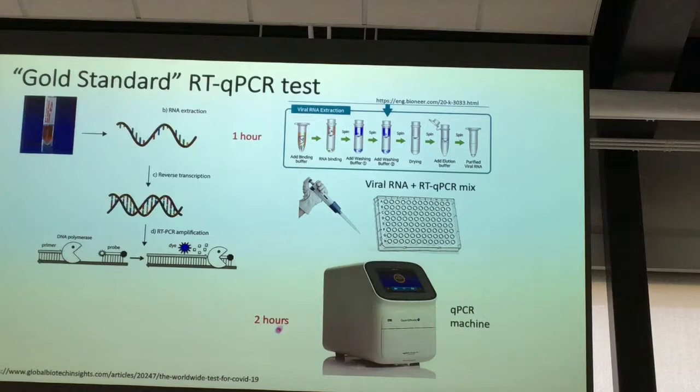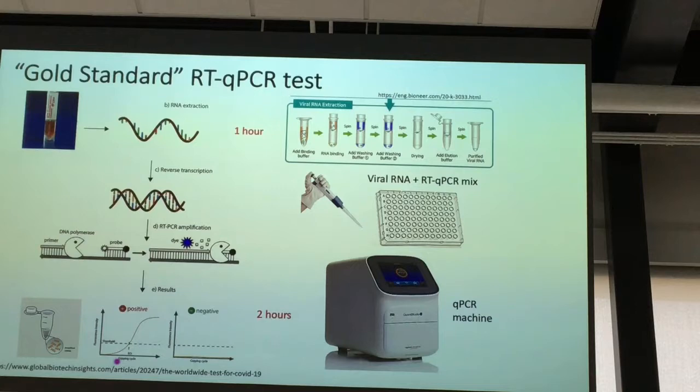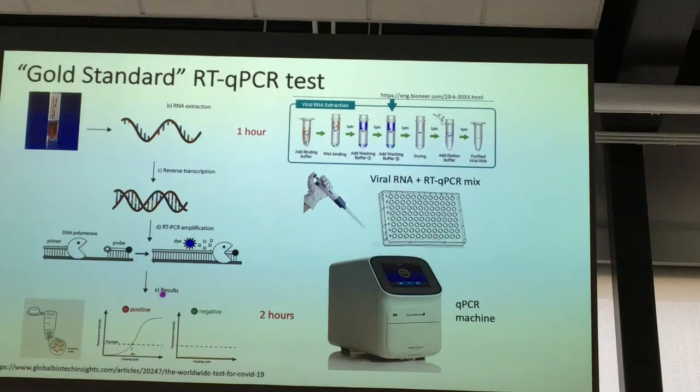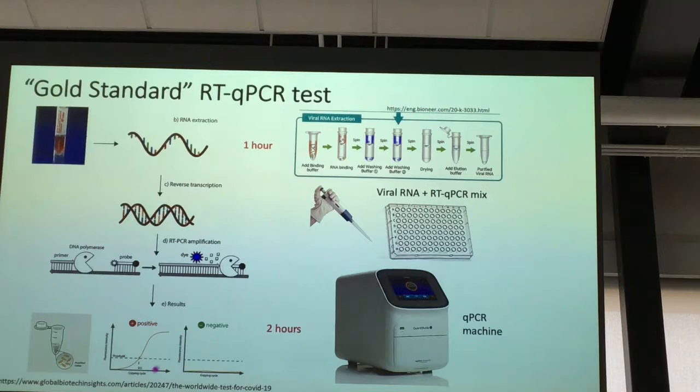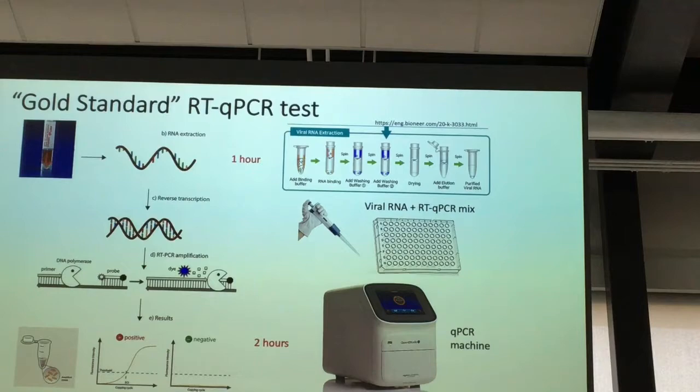Then you read your results. This is fluorescence intensity as a function of cycle number. If you do have virus, you'll see a curve increase and cross a threshold at some cycle number — that tells you how much virus you have. If there's no virus, there should be no increasing signal through the cycle numbers, and there are usually 40 cycles in PCR.